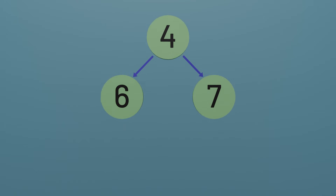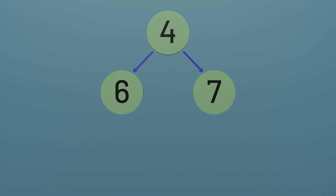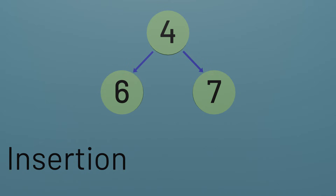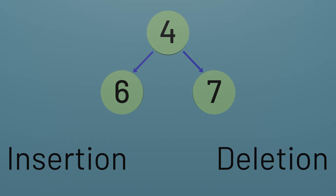Within this binary heap there are two common operations we'll likely need to perform. The first is insertion — adding a new node to the heap, as we might do if we have some new task to complete. The second is deletion — removing whatever is at the root of the heap, as we might do if we've completed the highest priority task.